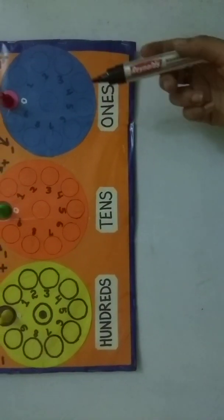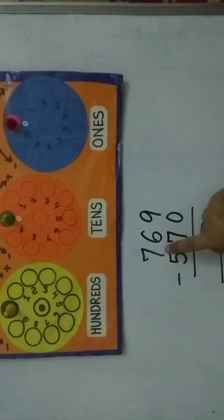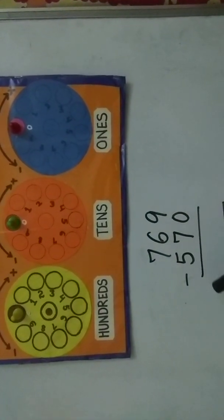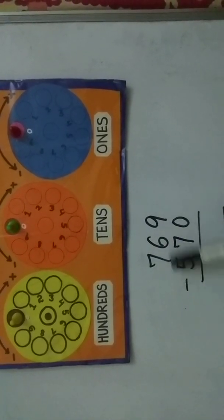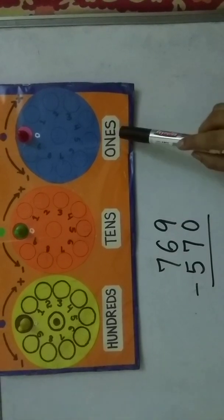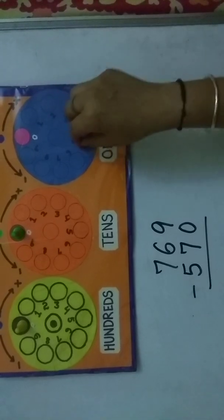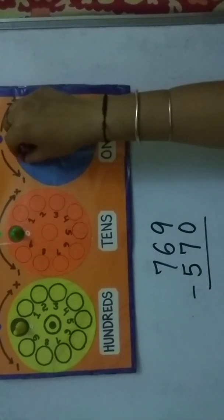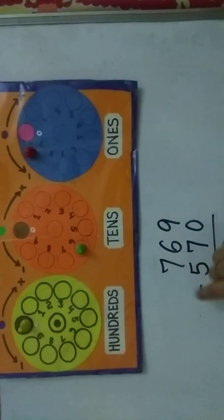Now let's look at subtraction. First, reset all circles to zero. The example is 716 minus 570. Place 716 on the model according to place values: six on the ones place — one, two, three, four, five, six; one on the tens place — one; and seven on the hundreds place — one, two, three, four, five, six, seven.